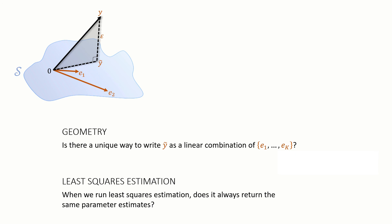This is what linear dependence is all about. If the features are linearly dependent there might be multiple ways to add them together to get to y tilde. In other words two different calls to the fitting routine might give back different parameter estimates.